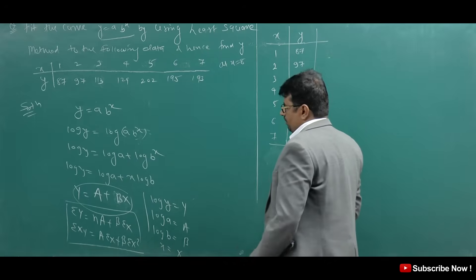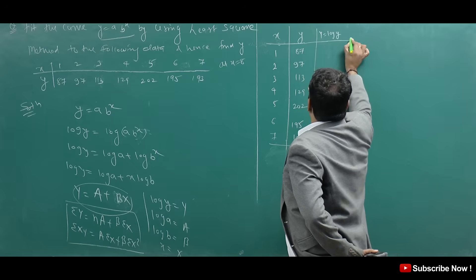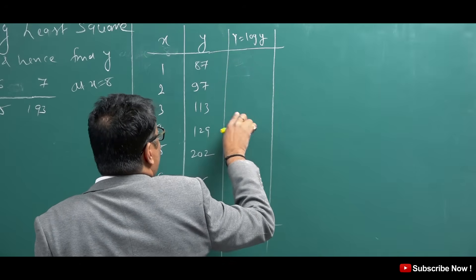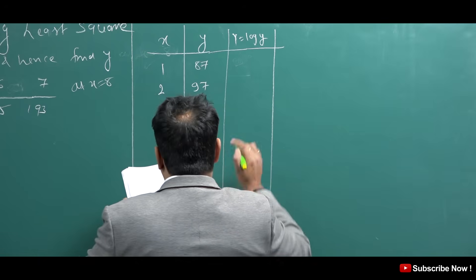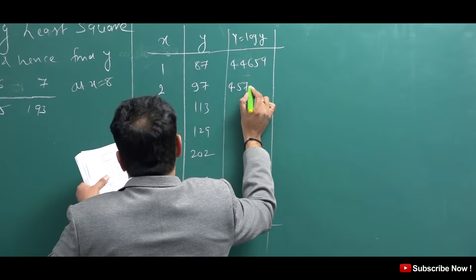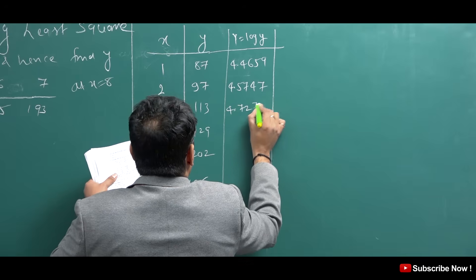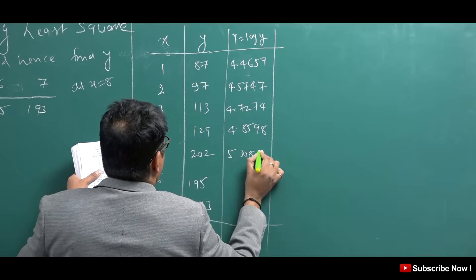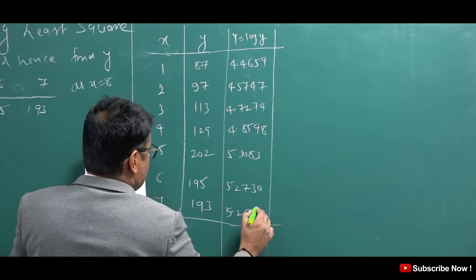Now, capital Y equals log of small y. So you have to compute: log 87, log 97, log 113, log 129, and so on for each Y value. Then the computed log values are: log 97, log 457, log 9, log 747, then 5.308, then 5.2730, then 5.2627.